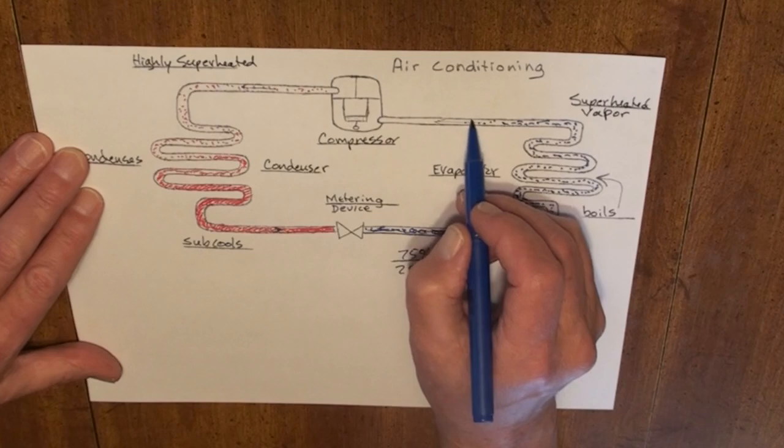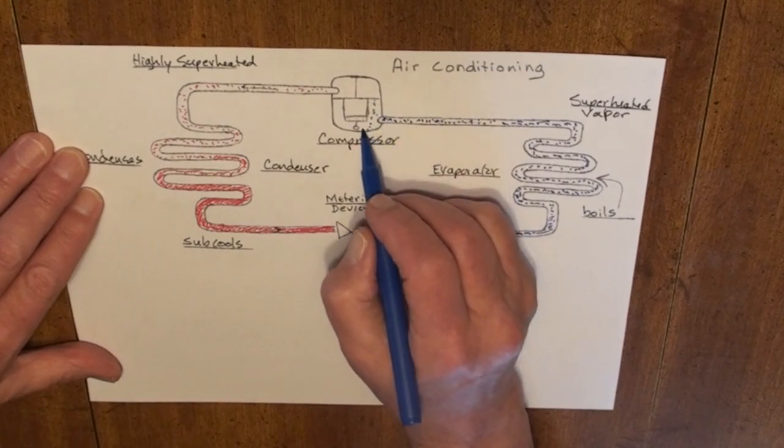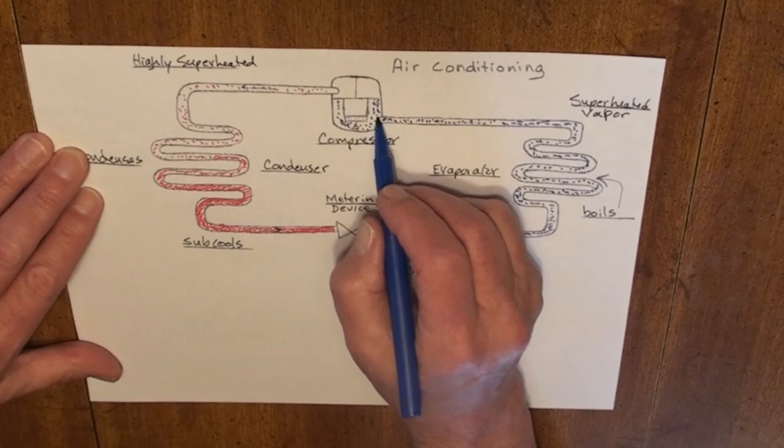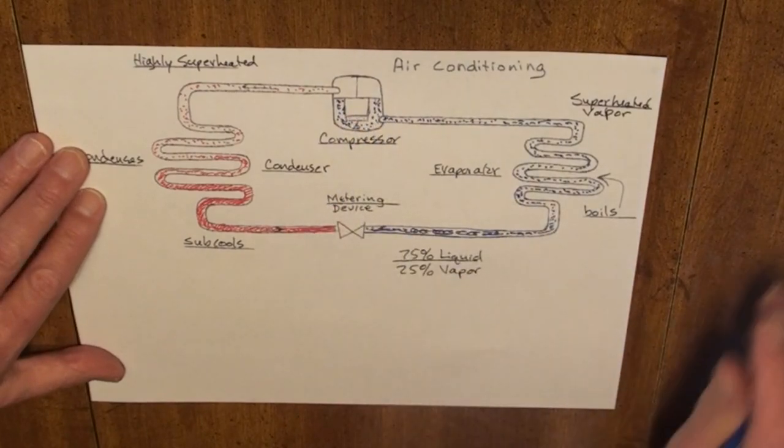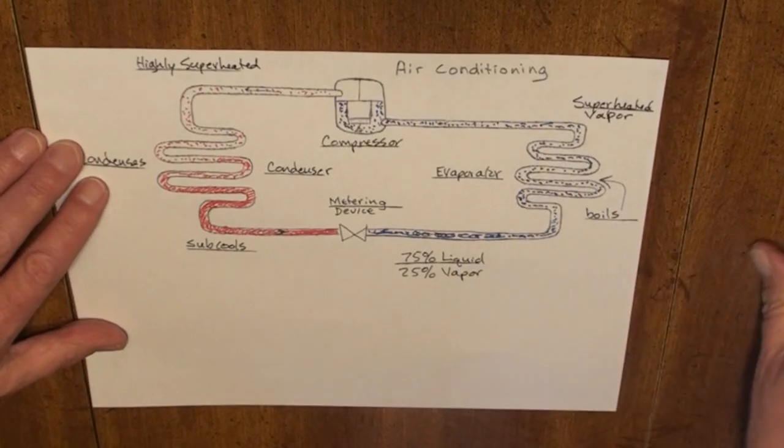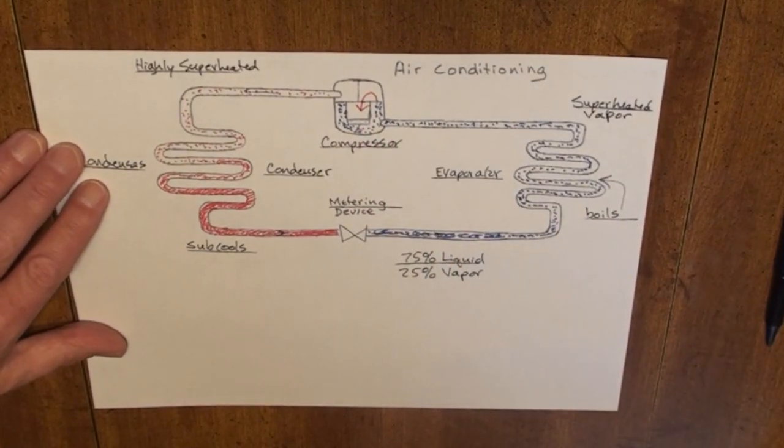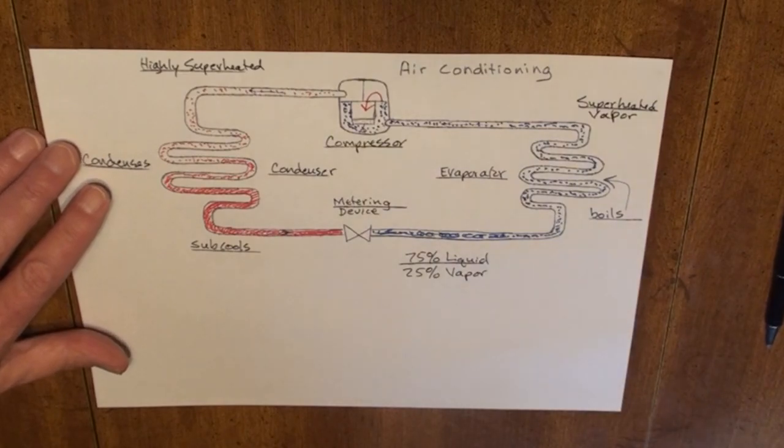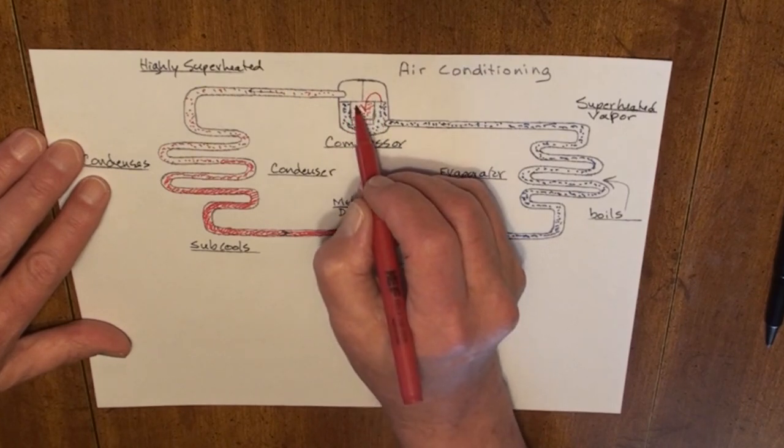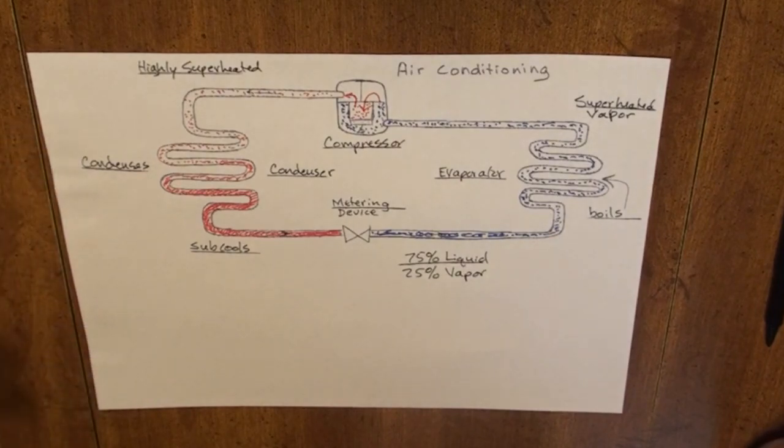It travels down the suction line. It enters the compressor. It just enters the shell. It envelops the crank, all the moving parts, all the metal parts, motor windings, etc. Absorbs heat from these parts and is drawn into my piston cylinder on the upstroke. It squeezes the refrigerant, adds the heat of compression, exits through the discharge valve, enters the discharge line to complete the cycle again.